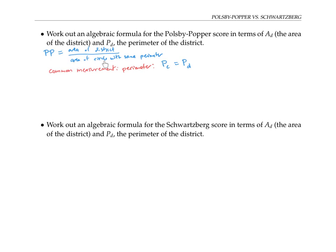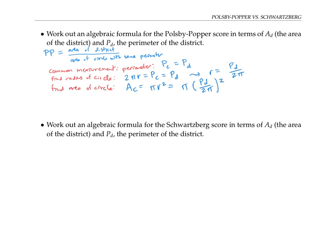Since we need to calculate the area of a circle with the same perimeter as the district, let's first find the radius of that circle. Using the formula for the circumference of a circle: two pi r equals the perimeter of the circle, which equals the perimeter of the district. Solving for r gives r = P_d / (2π). Then the area of the circle is pi r squared, which is π × (P_d / 2π)², and distributing the square gives π × P_d² / (4π²). Canceling one pi, the area of the circle simplifies to P_d² / (4π).